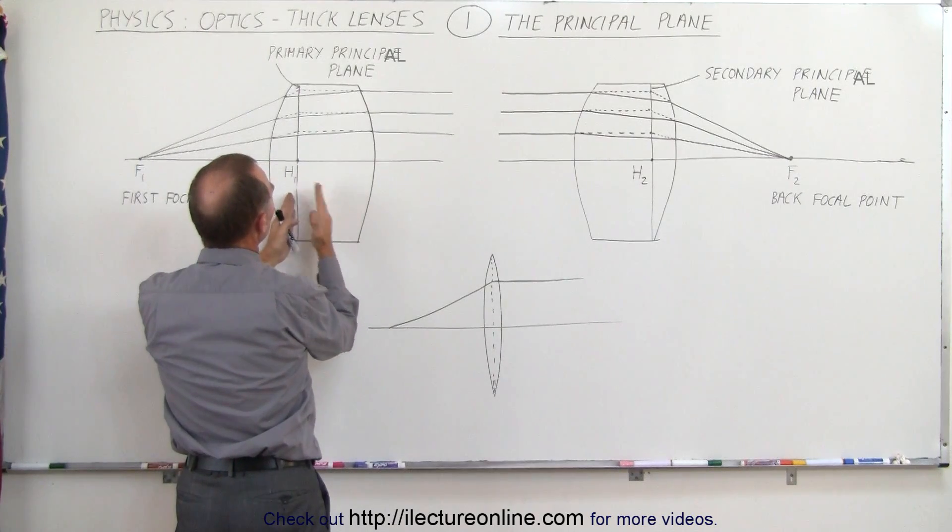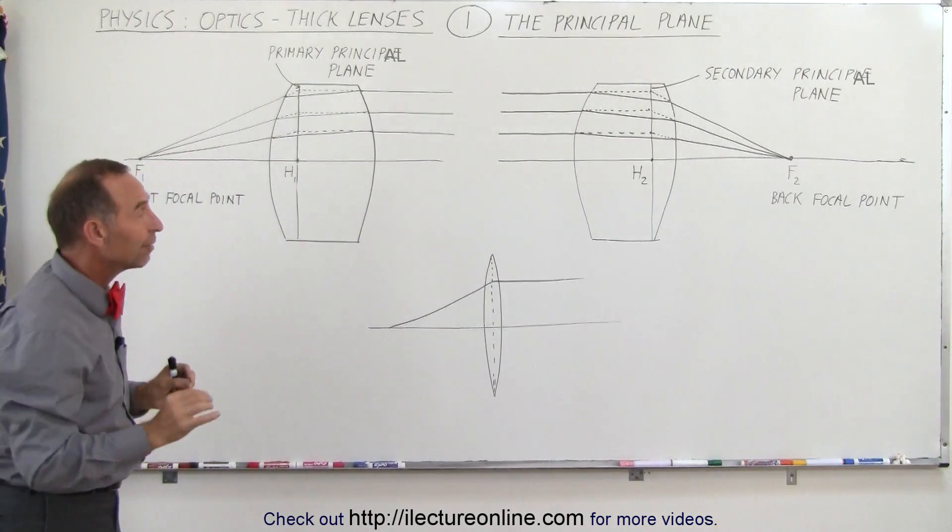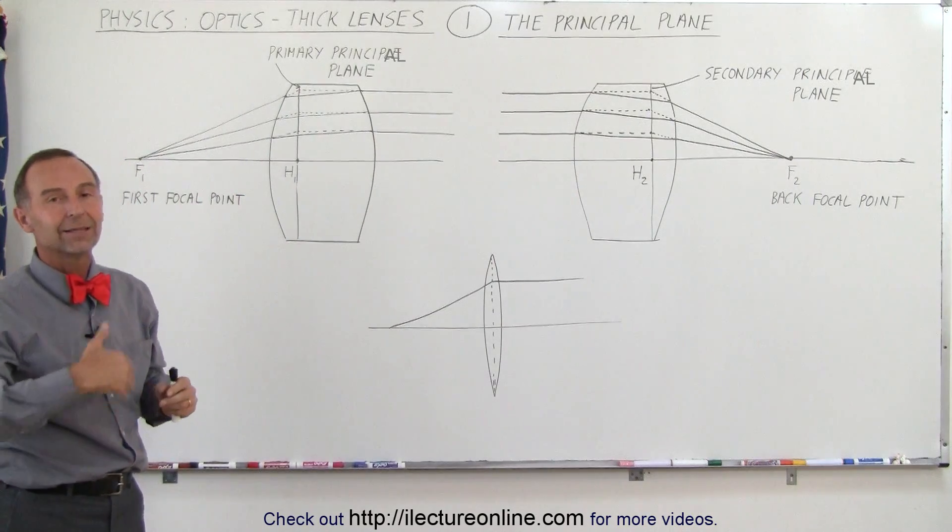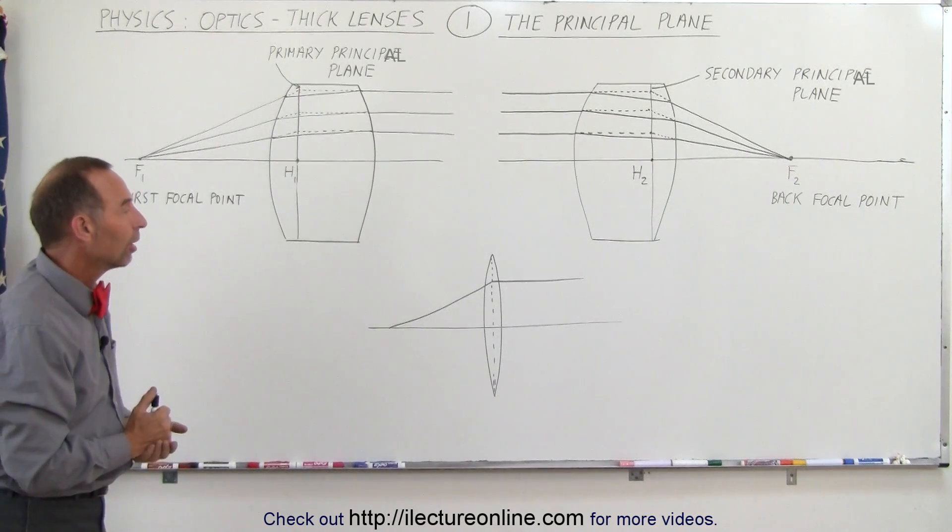And so you can see that there's going to be a distance between those two points and we need to take that distance into account. That will make a difference when we start calculating the location of the object and the location of the images.